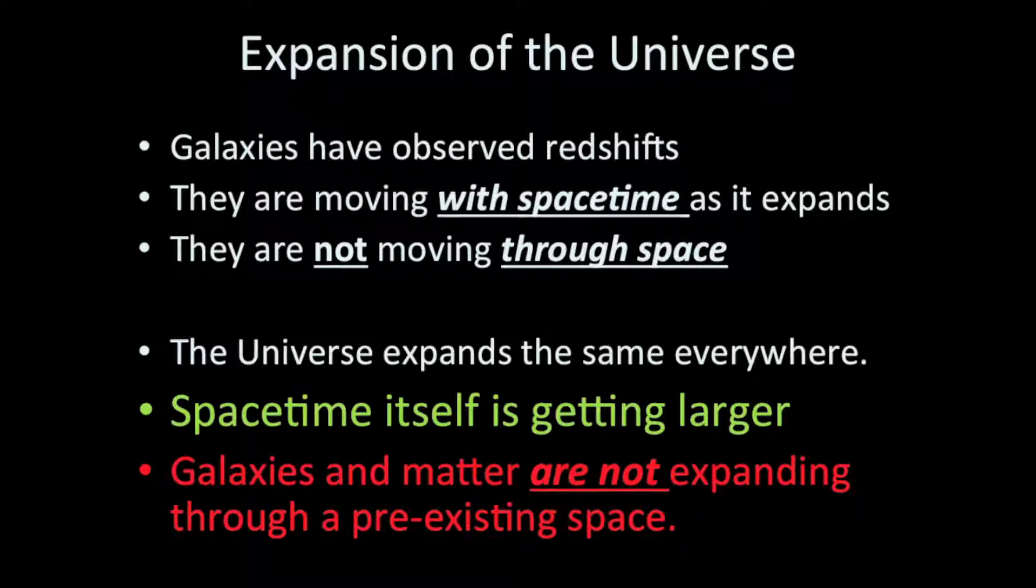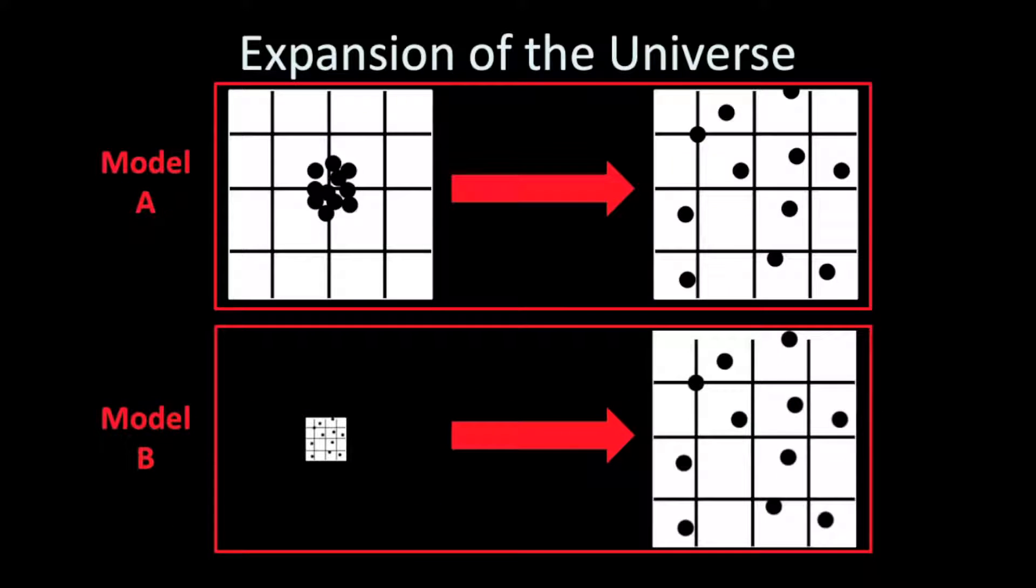Space-time itself is getting larger. Galaxies and matter are not expanding through a pre-existing space. Let me describe to you what I mean. Here are two different models of expansion, Model A and Model B. We have a grid that's been set up to represent space-time, and the dots represent galaxies within that space-time.